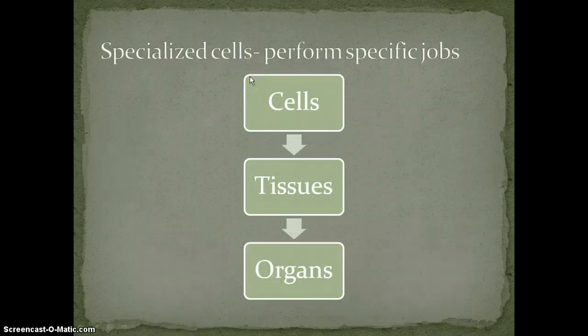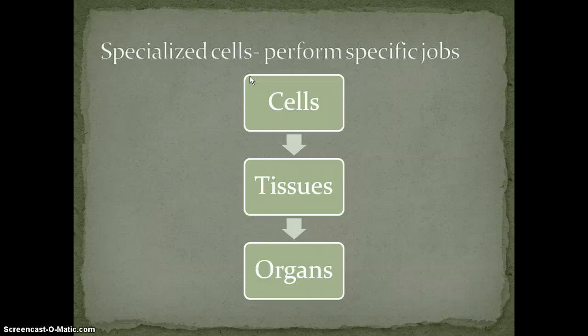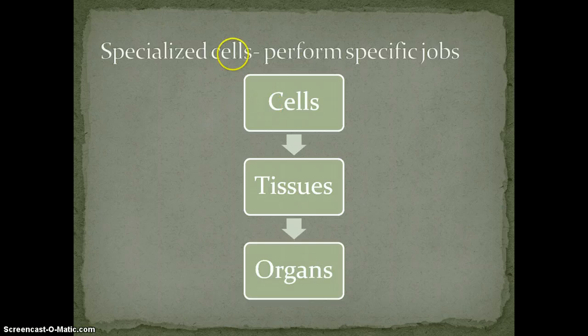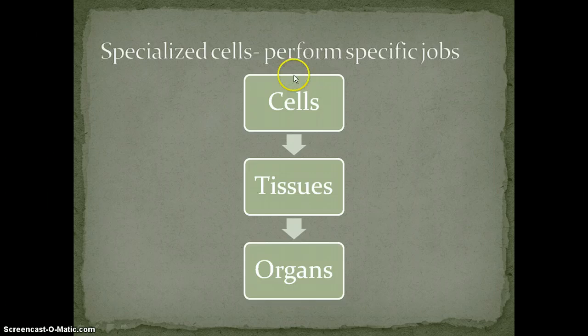What is a specialized cell? A specialized cell just means that it performs a specific job. When you have a bunch of cells that work together to do a specific job, they make tissues. And then if you get a bunch of those tissues together, they can form organs. An example would be cardiac muscle cells — they make cardiac tissue, which makes the organ, the heart.